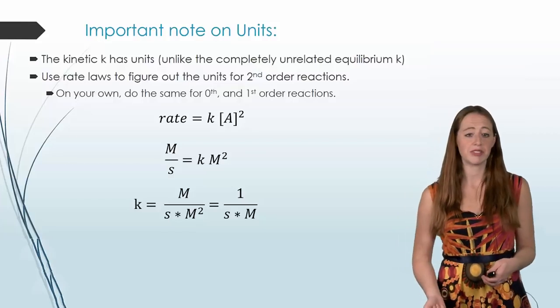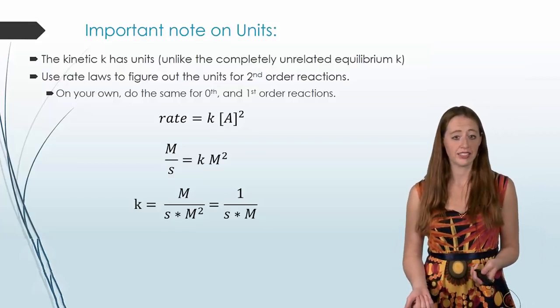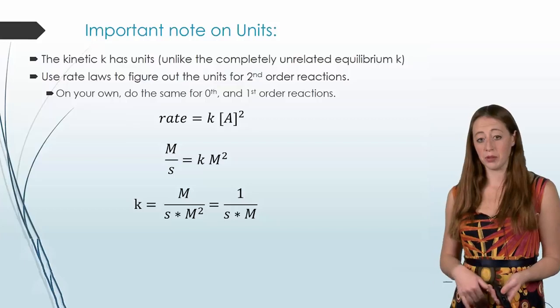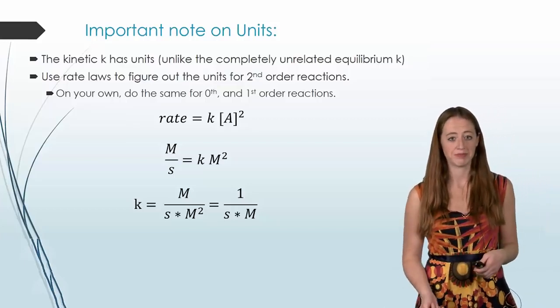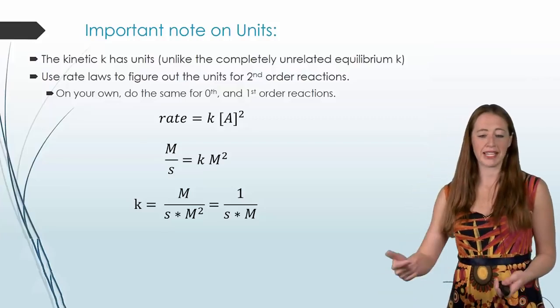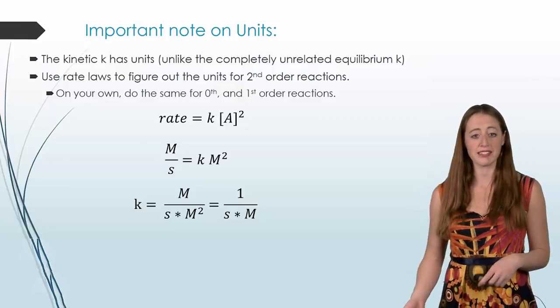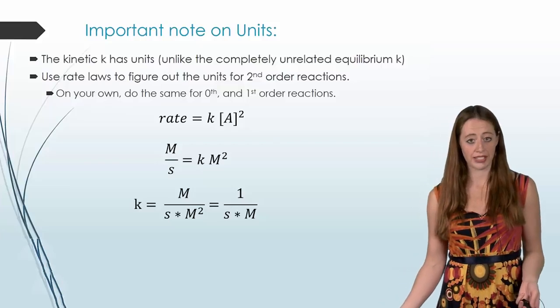So now I'm moving down to the third row. If we solve for k here, we end up with molarity divided by seconds over molarity squared. We can simplify that by canceling out the molarities to end up with one over seconds molarity.